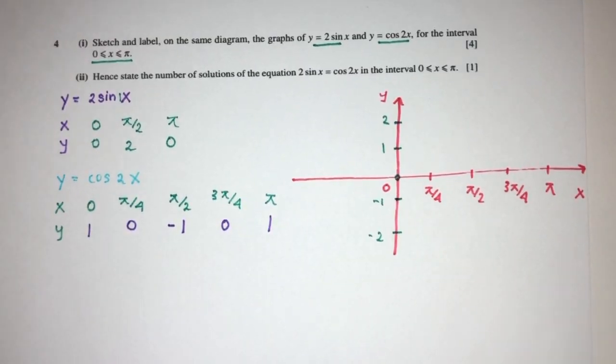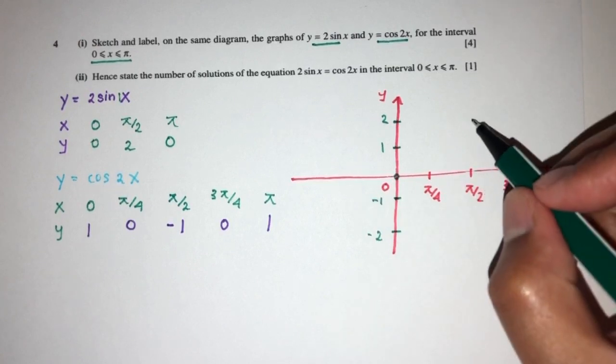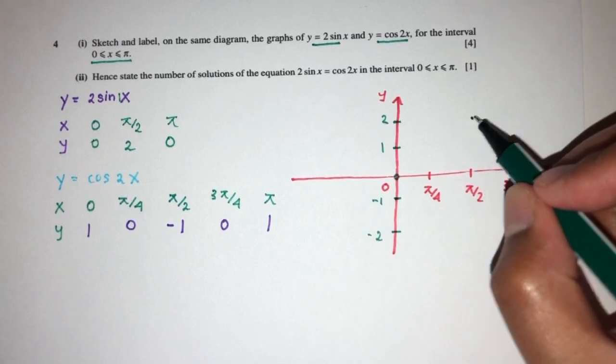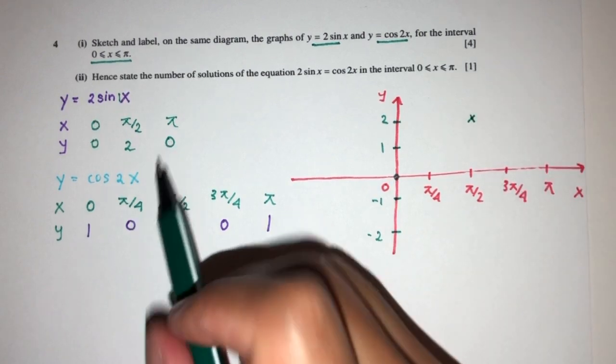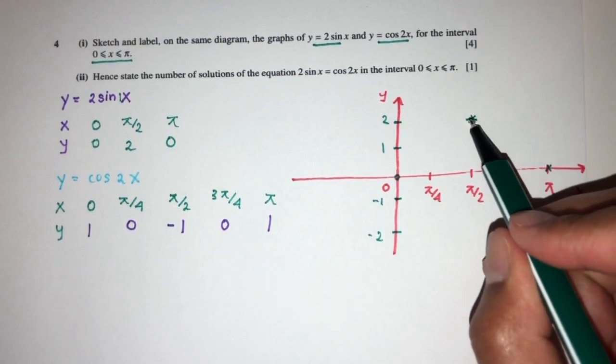Now first one is (0, 0). And we have π/2 is 2, that should be somewhere over here. And then we have this will be 0 again. As you can see, here will be our graph for the first one.